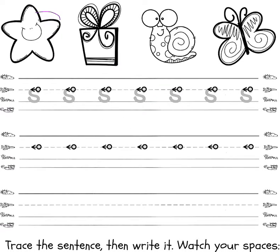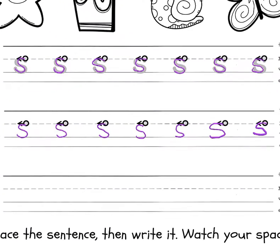When you are done with that part, we are going to trace again — starting at the plane line, curving around and around, making sure we are landing on that grass line. Then with the dots, same thing. Make sure your S is sitting on that grass line. And then that bottom line, there's nothing there, so it's your chance to practice.